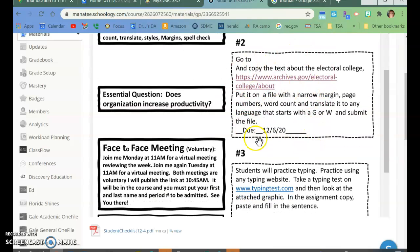Then assignment two, you're going to be taking what you have learned. So you're going to go here to this page, and you're going to copy and paste the information. You're going to put it on a file. You're going to narrow the margins. You're going to add page numbers. You're going to put a word count, and you're going to translate it to a language. Then you will submit the file.